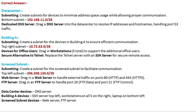The next section is the Screen Subnet. For subnetting, create a subnet for the Screen Subnet to facilitate communications. The correct IP is 206.208.134.0/28. For the web server, drag in a web server to handle external traffic on port 80 (HTTP) and port 443 (HTTPS). For the FTP server, drag in an FTP server to handle port 20 (FTP data) and port 21 (FTP control).